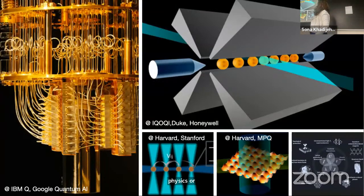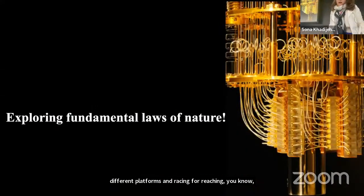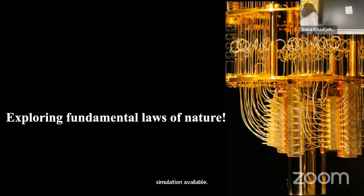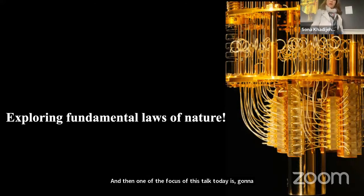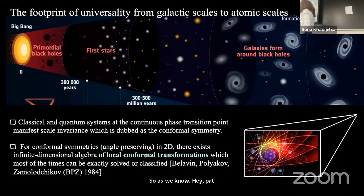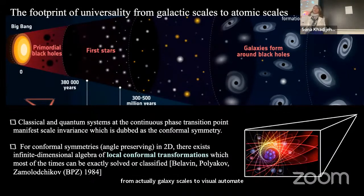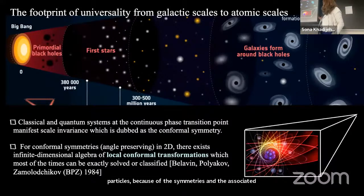Historically, quantum simulation itself is one of the early promises for quantum computers. Because of the different degrees of freedom in quantum matter, much of the theoretical work is hard or challenging. Computational schemes we currently have can only work in particular regimes—for example, quantum Monte Carlo may suffer from the sign problem at low temperature. The promise of quantum computers for quantum simulation is to overcome these challenges and deepen our understanding of quantum physics and material science.